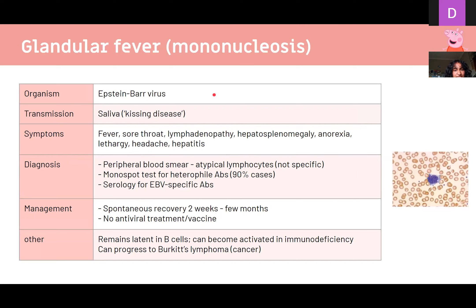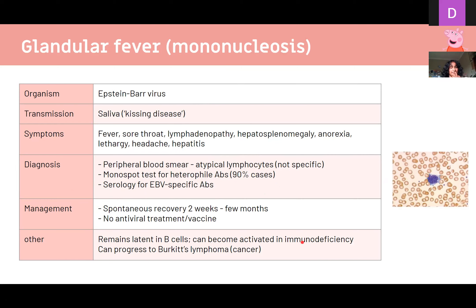Glandular fever, also known as infectious mononucleosis or 'kissing disease' because it's transmitted via saliva, is caused by Epstein-Barr virus. It infects B cells and causes fever, sore throat, swollen lymph nodes, and enlarged liver and spleen. Diagnosis involves looking for atypical lymphocytes on a blood smear, the monospot test which detects heterophile antibodies present in 90% of cases, and serology. Importantly, EBV can remain latent in B cells and reactivate when the immune system is compromised, and rarely progress to Burkitt's lymphoma.